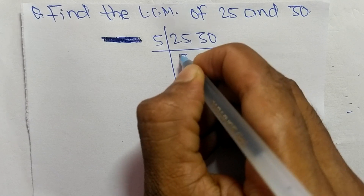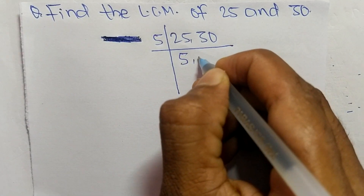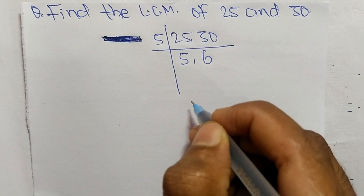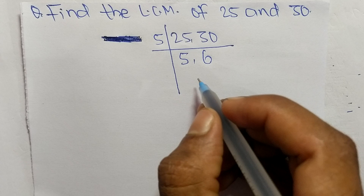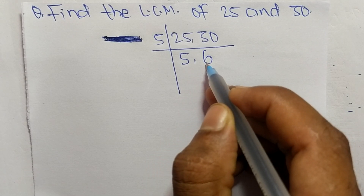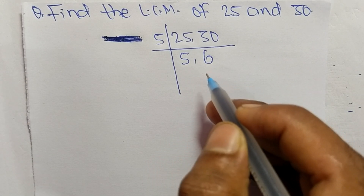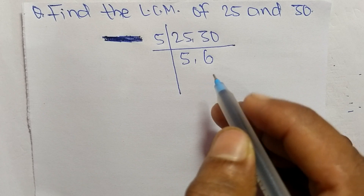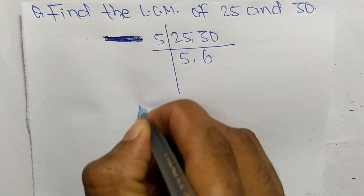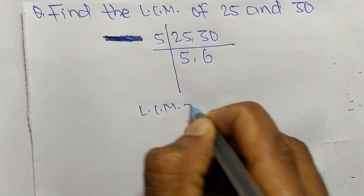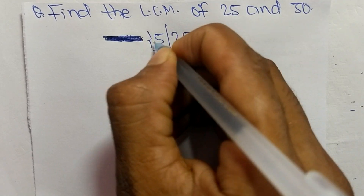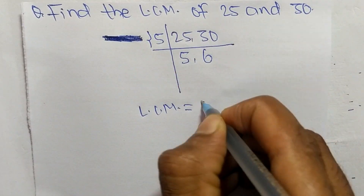5 times 5 equals 25, and 5 times 6 equals 30. So we are left with 5 and 6, which are not exactly divisible by the same number. So the LCM is calculated from these parts.